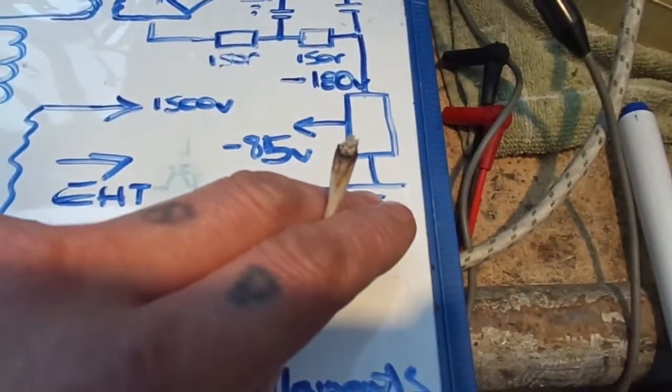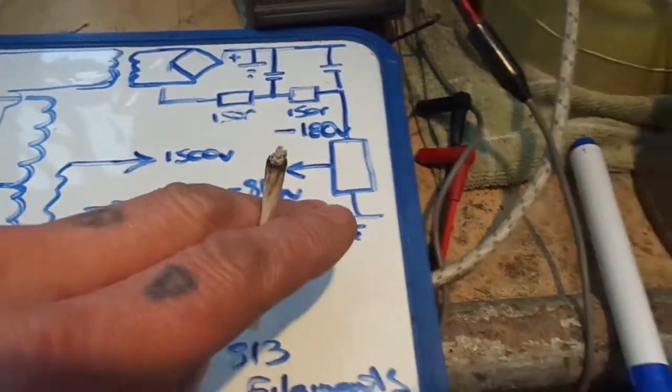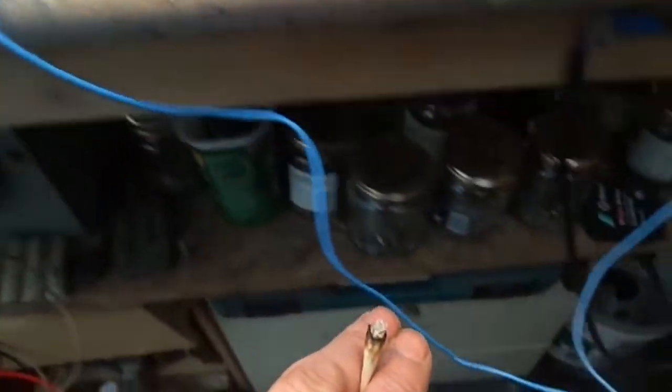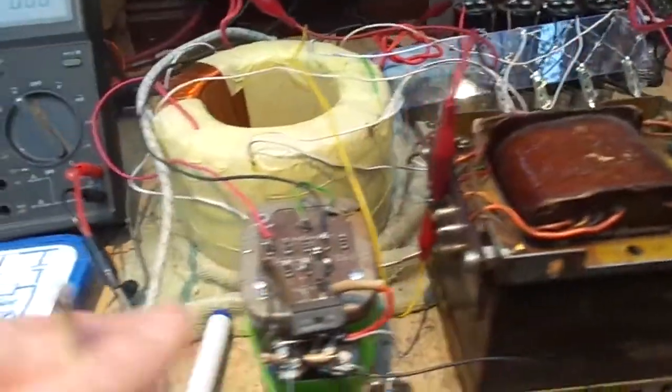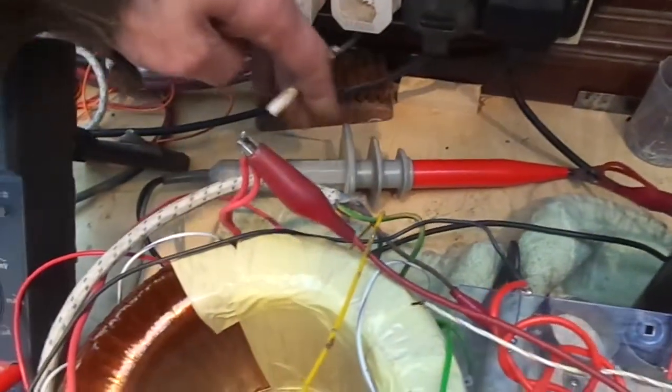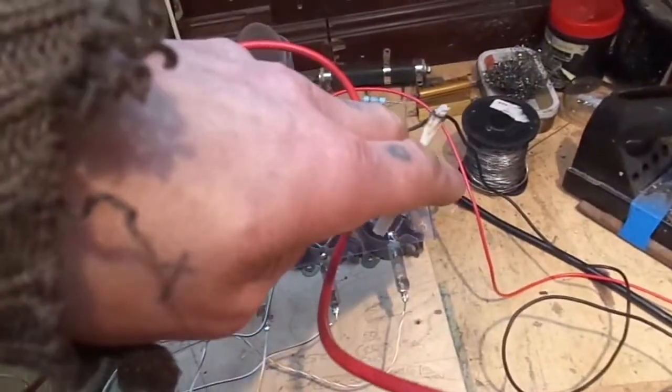That's forming two RC filters to give us roughly minus 180 volts, which goes into this pot here. One end is connected to ground, one end to minus 180. That gives us 85 volts going through this blue wire into grid one of the 813.